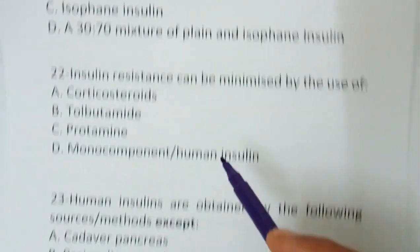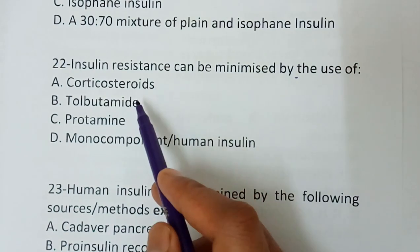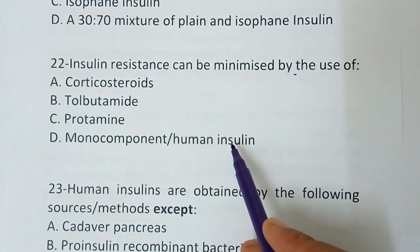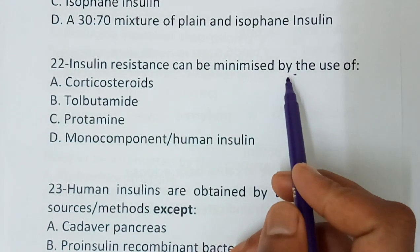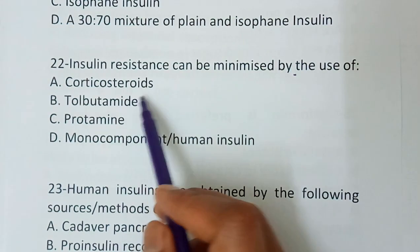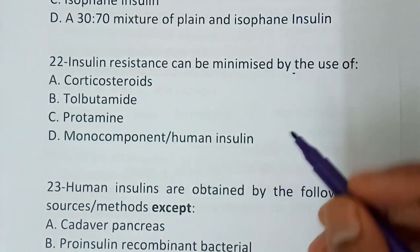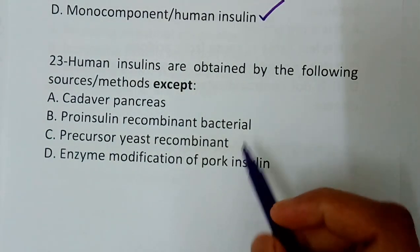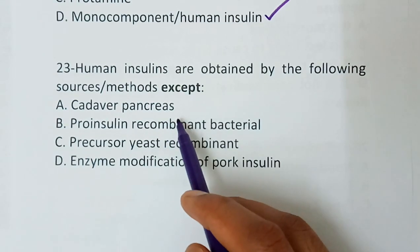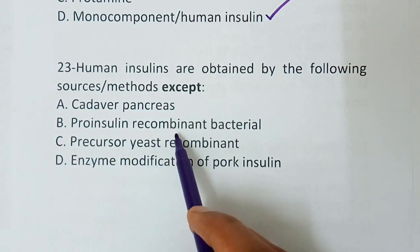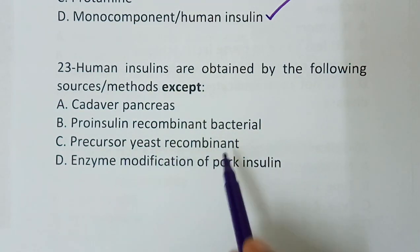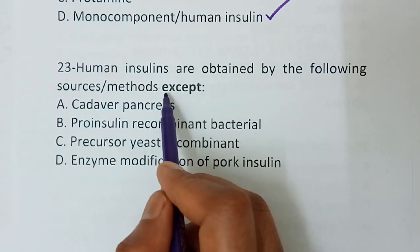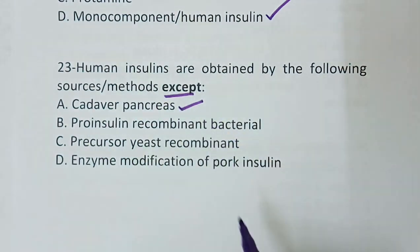Question number 22 — insulin resistance can be minimized by the use of. Moving to question number 23 — human insulins are obtained by the following sources, except: option A, cadaver pancreas; option B, pro-insulin; option C, recombinant bacteria; option D, precursor yeast recombinant; option E, enzyme modification of pork insulin. The correct answer is cadaver pancreas.